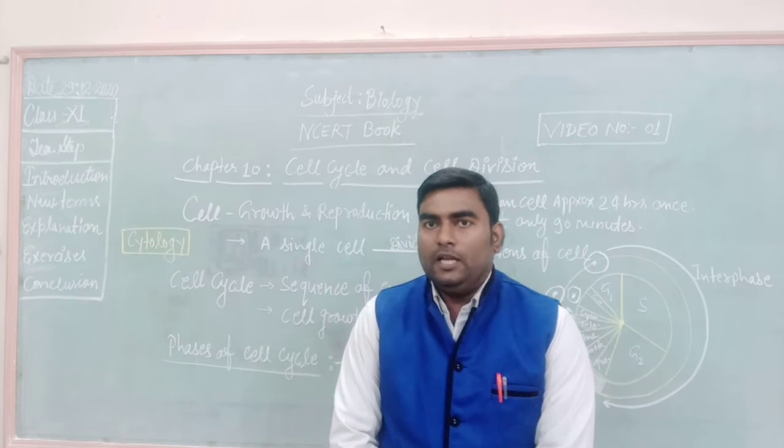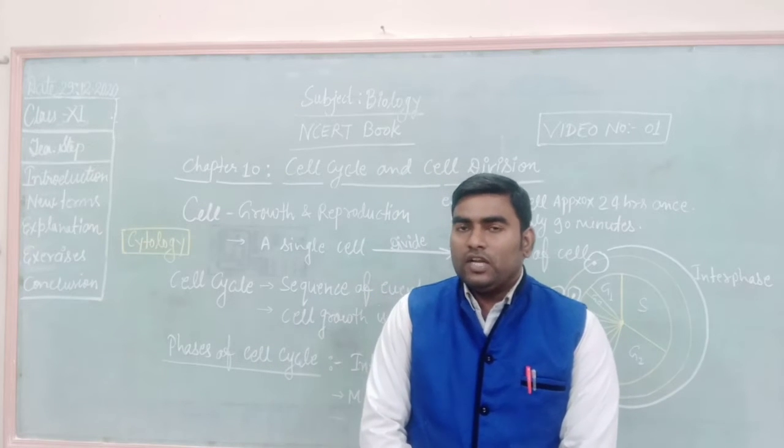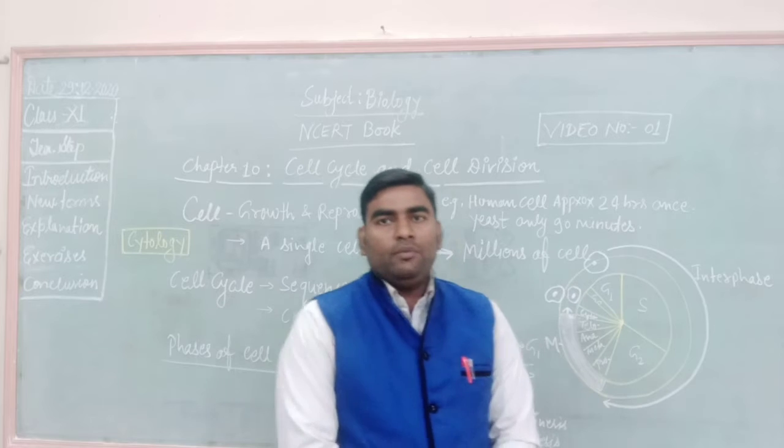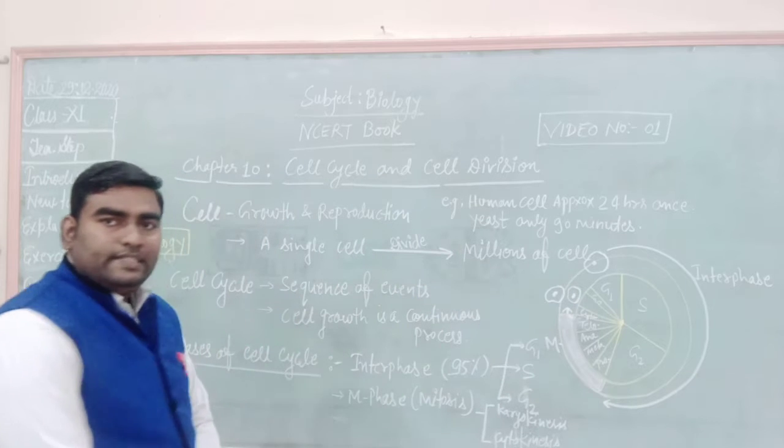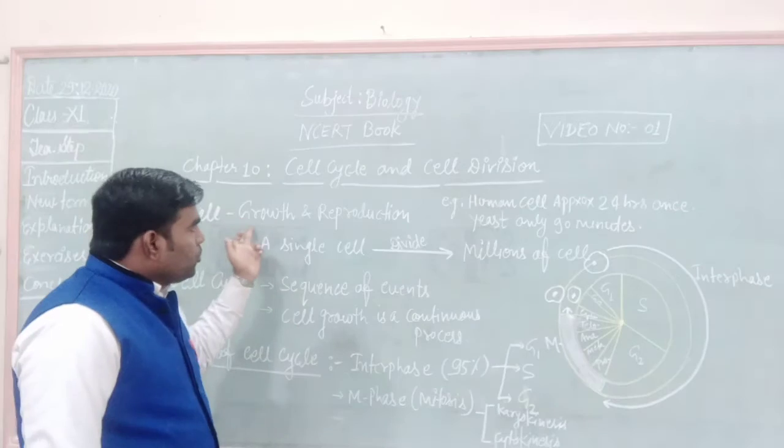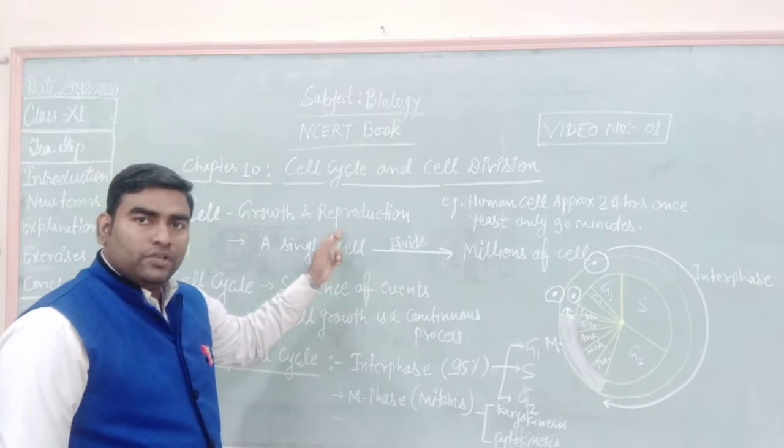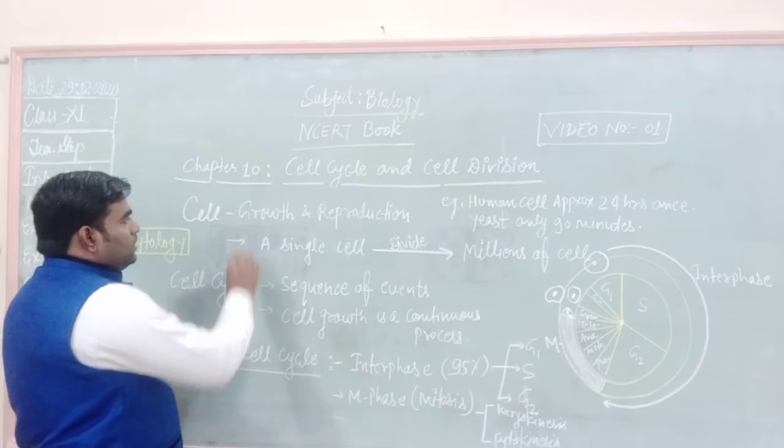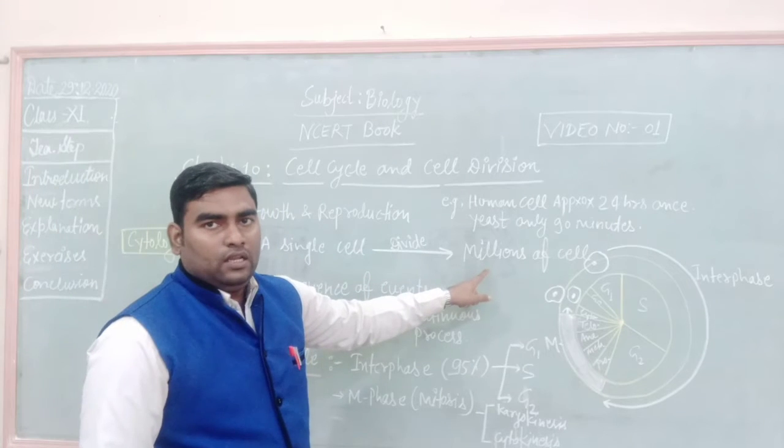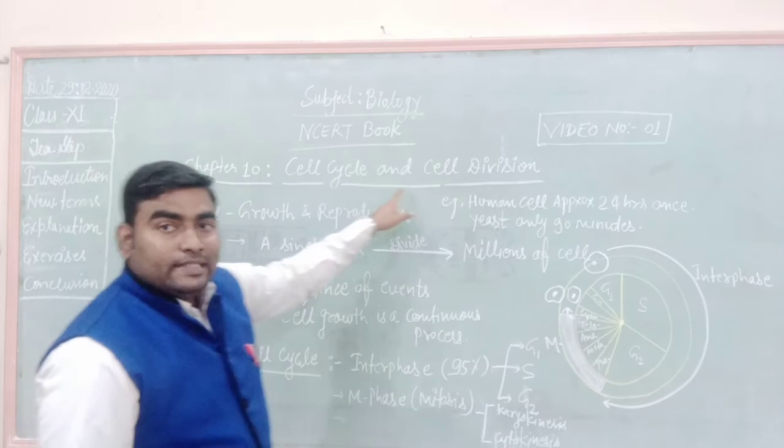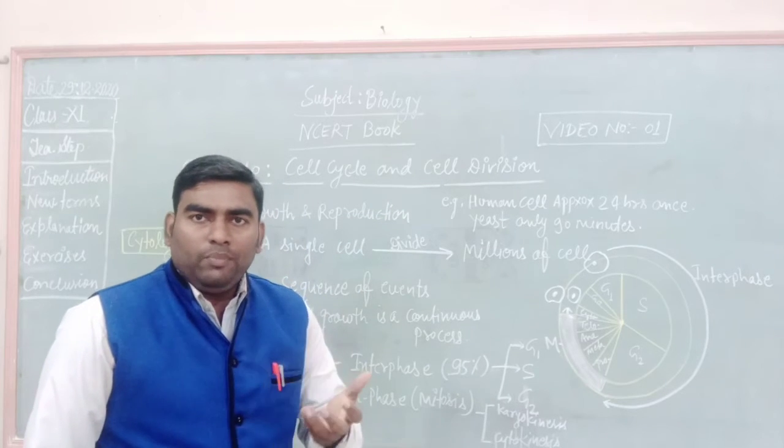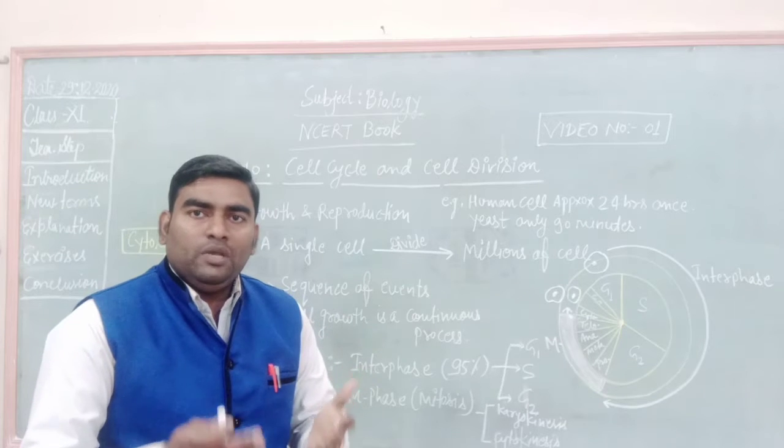As you know about the cell, cell is the structural and functional unit of life. Based on prior knowledge, see about what is the cell cycle and cell division. Students, cells have growth and reproduction characteristics. You see here, a single cell can be multiplied by millions of cells. In this particular chapter of cell cycle and cell division, we will study about how a single cell gets multiplied and divided to form millions of cells.